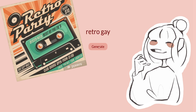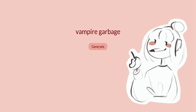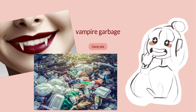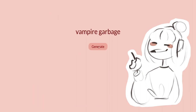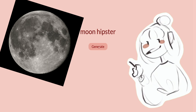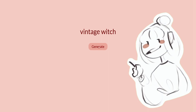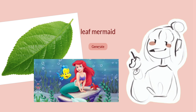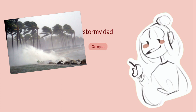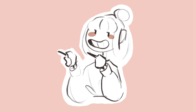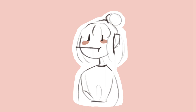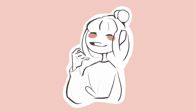Here are the generated aesthetics: retro gay, vampire garbage, moon hipster, vintage witch, leaf mermaid, and stormy dad. I've generated quite a few — I'm going to pick five of them, pick two which I really want to draw, and put the rest up for a vote. See you in another voiceover while I'm drawing them!